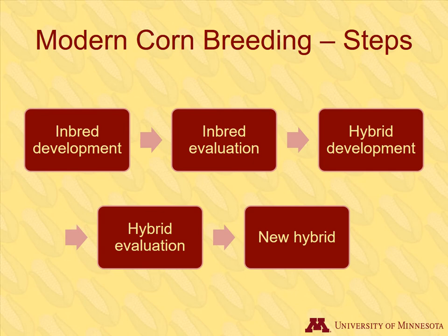Here is an overview of modern corn breeding. You can see from this graphic that there are many steps in the corn breeding process before the farmer even gets to buy the new hybrid. Breeders select suitable starting materials, and then the process begins.